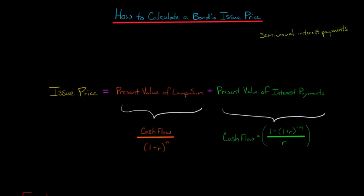In this video, we're going to talk about how to calculate the issue price of a bond when the bond pays interest on a semi-annual basis. The issue price of the bond is still going to be the sum of two things: the present value of the lump sum (the amount that the investor would be repaid when the bond matures), plus the present value of the interest payments that are going to be made along the way.